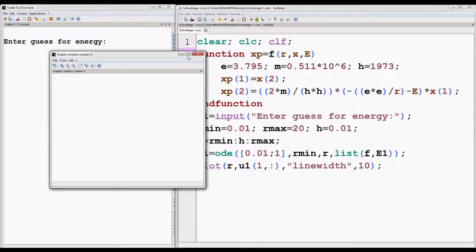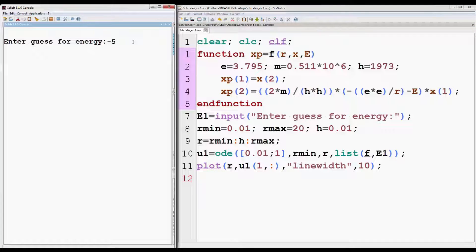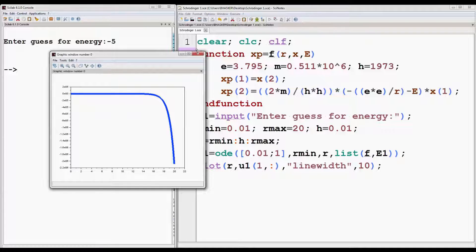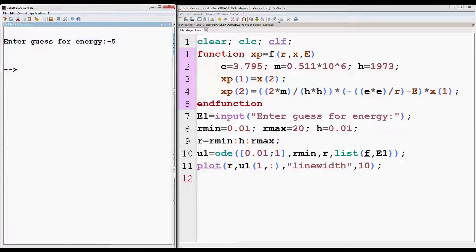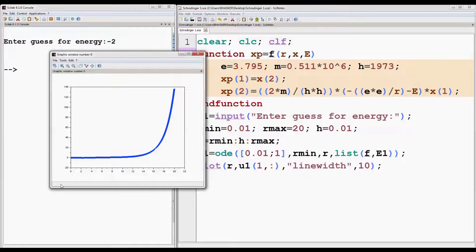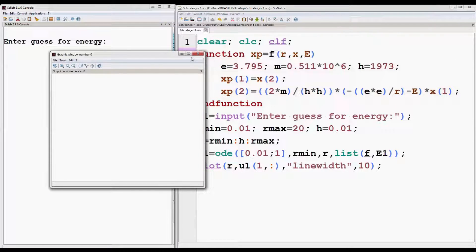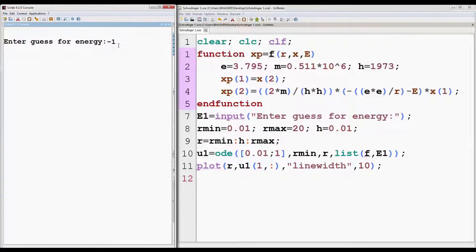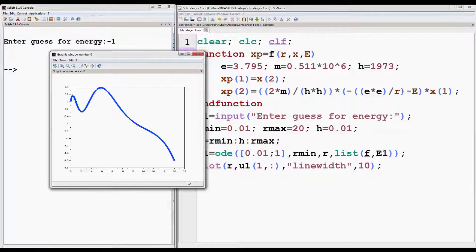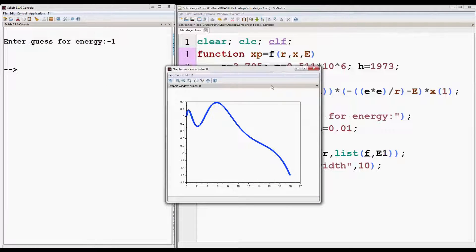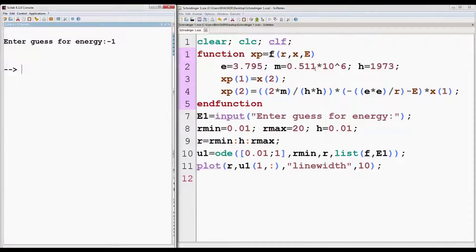Again run the program for value minus 5. It's going to minus infinity. So no change of sign. If we give the value minus 2, it's again going to plus infinity. Since the graph is changing sign, so first excited state lies between minus 2 and minus 5. Finally if we give the value minus 1 and press enter, it's again changing sign and going to minus infinity. So second excited state lies between minus 2 and minus 1 electron volts.